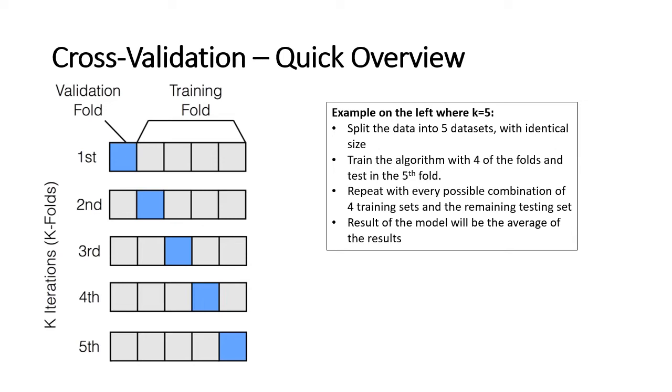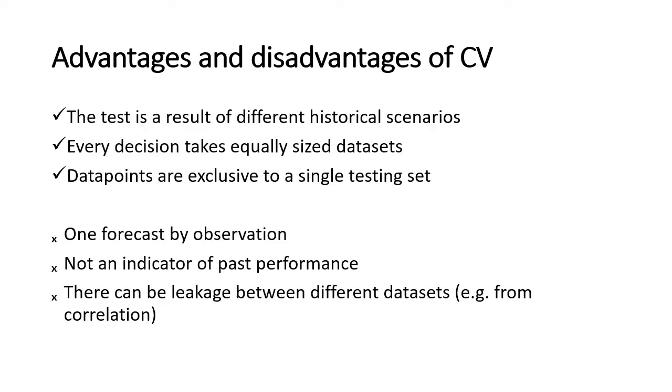This technique guarantees that we are not optimizing for a single testing dataset, but for the entirety of the dataset in a different way. As any approach, cross-validation has a set of advantages and disadvantages. The first advantage is that you're testing different historical scenarios and not just one, and that prevents overfitting. The second advantage is that you're using equally sized datasets for every decision that you make, thus your decisions are based in comparable datasets in terms of the amount of information that each has.